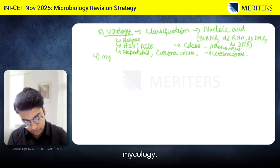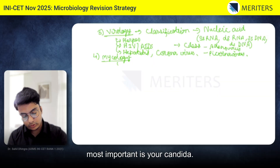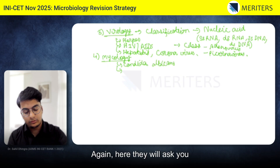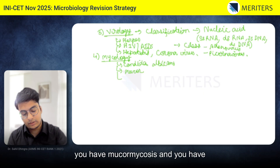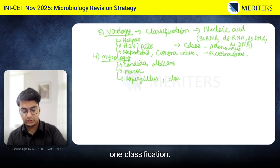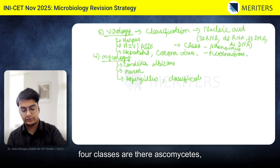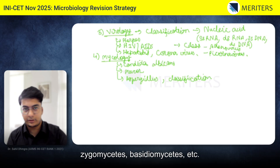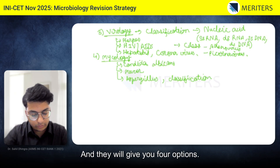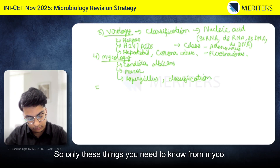Next is mycology. The most important is Candida — they will also ask from classification. Then you have mucormycosis and Aspergillus. These three are the most frequently asked. They will also ask one classification question involving the four classes: Ascomycetes, Zygomycetes, Basidiomycetes, etc. — for example, which of the following is a Basidiomycete, with four options.